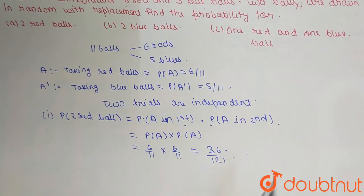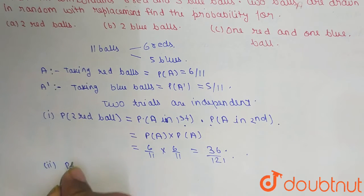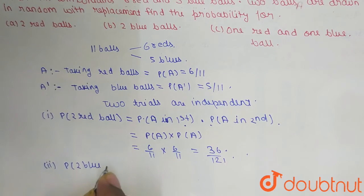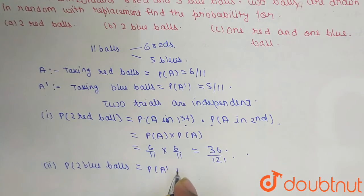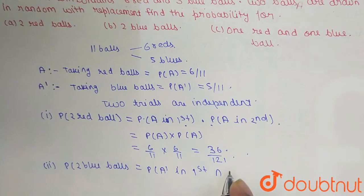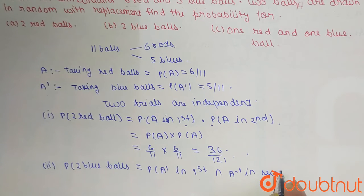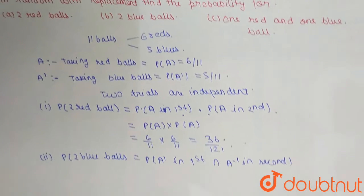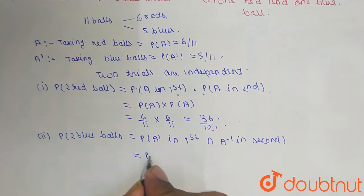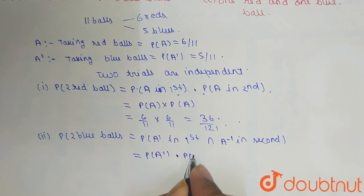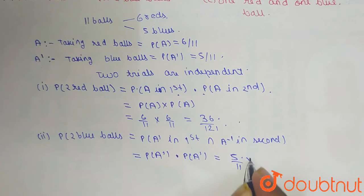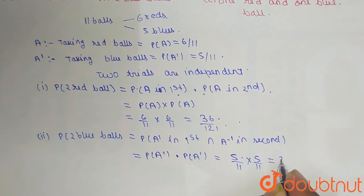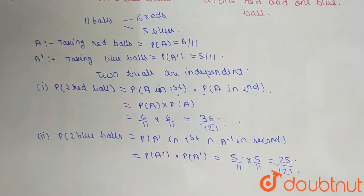Similarly, the probability for two blue balls equals P(A complement) in the first draw intersection P(A complement) in the second draw. Since trials are independent, this equals P(A complement) multiplied by P(A complement), which is 5/11 cross 5/11, giving us 25/121.